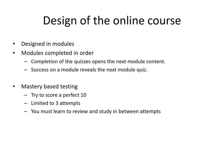Mastery-based testing means you want to try to score a perfect 10. You're limited to three attempts, and you must review and study in between attempts. Study, take quiz one, then review and study the results of quiz one — not only the questions you missed, but the ones you know in your heart you got lucky on. You didn't miss number three, but you didn't really know it. Go back and study that so you're ready for it the next time it shows up.